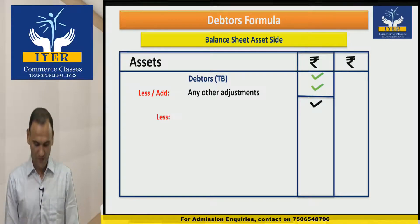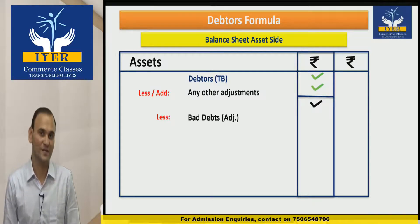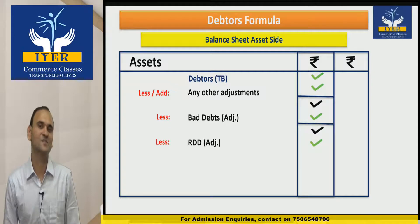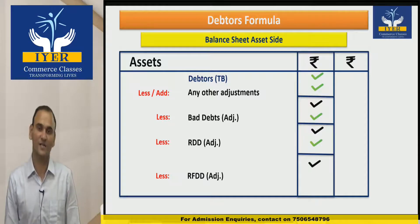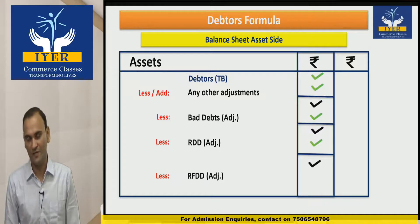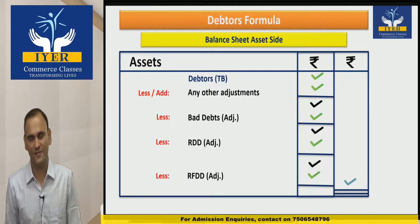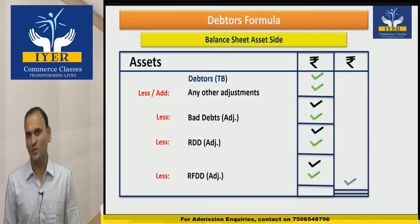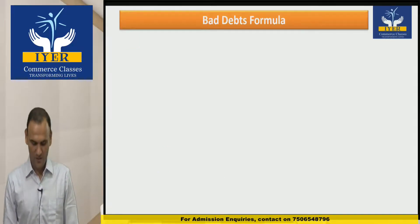From that we are going to deduct Bad Debts as per adjustment, then deduct RDD as per adjustment, and then deduct RFDD as per adjustment. This is how we will derive the final amount of debtors. The formula is: Debtors as per Trial Balance, less or add any other adjustments, less Bad Debts as per adjustment, less RDD as per adjustment, and less RFDD as per adjustment.